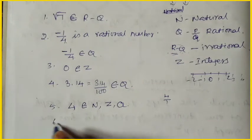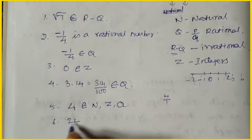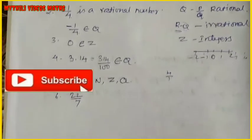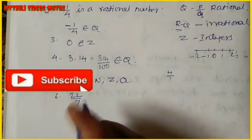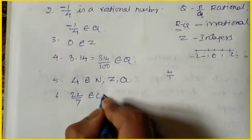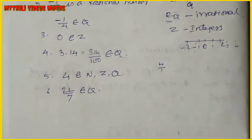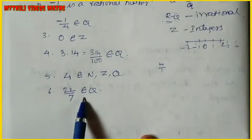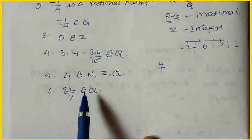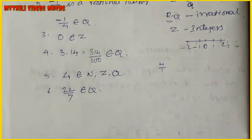22/7 — fraction type — this belongs to Q, the rational number. That is the sum. For any values, if you have doubts, comment in the comment box. Subscribe, like, share. Thank you.